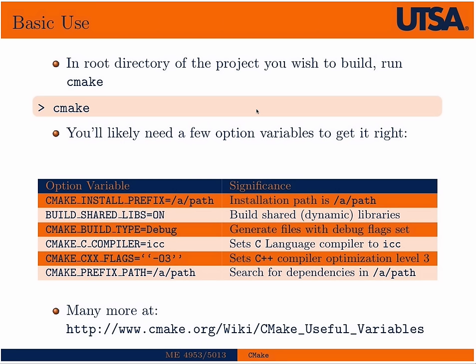In basic use, similar to the autotools configure workflow, in the root of a CMake project you simply type CMake. This rarely works right out of the box — you typically want to set configuration variables like the install prefix, or the directory in which executables or libraries will be installed. By default most builds produce static libraries, but you can set a flag to build shared or dynamic libraries.